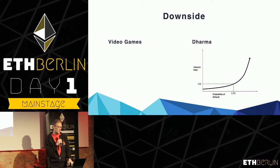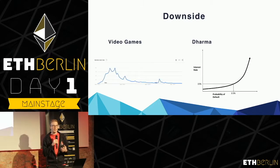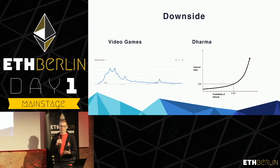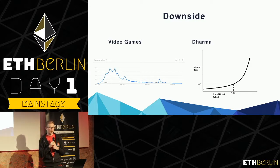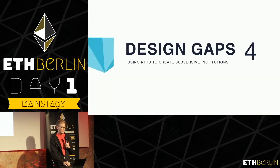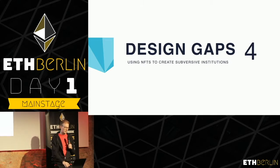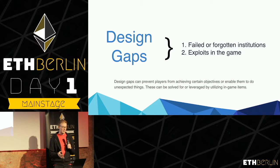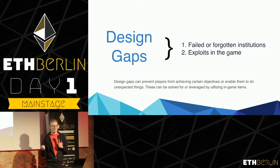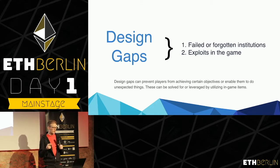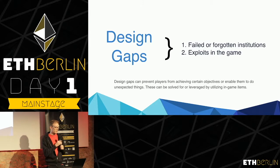That's not to say there aren't downsides to video games, because there are. If you spend a lot of money or time in a video game, it could become dramatically less popular over time and you've just wasted a lot of time and money in that ecosystem. Moving on to the next opportunity: using NFTs to design over gaps in existing ecosystems — a way to create subversive institutions. A design gap is a failed or forgotten institution. In video games, it might be a glitch in the game. Design gaps typically prevent players from achieving certain objectives, or can enable them to do unexpected things, and these are typically solved by leveraging in-game items.